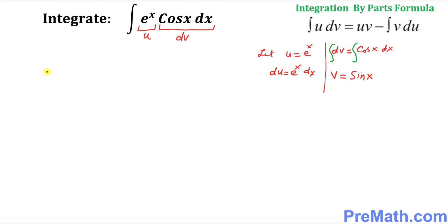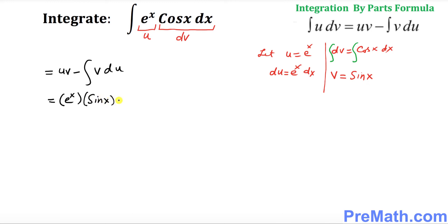Now we start working with integration by parts. The integral of u dv is equivalent to uv minus the integral of v du. So u is e^x, v is sine(x), giving us e^x·sine(x) minus the integral of sine(x) times e^x dx.